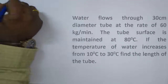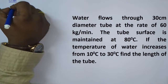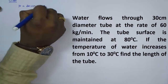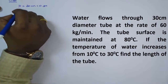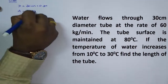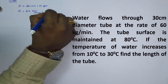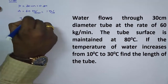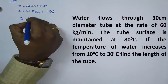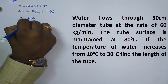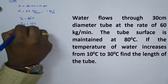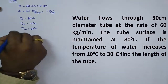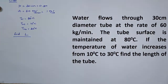In the next problem, water flows through a 30 cm diameter tube (d = 0.3 m) at a mass flow rate of 60 kg/min = 1 kg/s. The tube surface is maintained at T_w = 80°C. The temperature of water increases from T_mi = 10°C to T_mo = 30°C. Find the length of the tube.